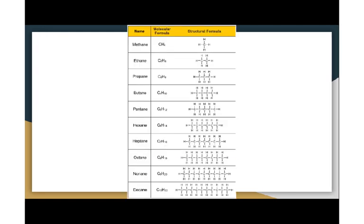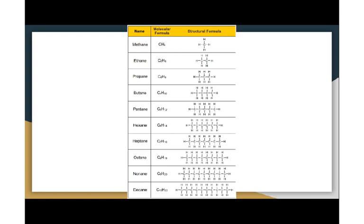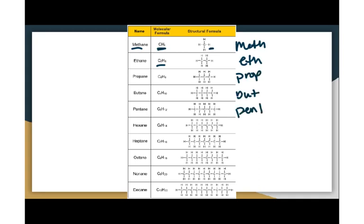Here's an example of alkanes. The first thing was to identify the longest carbon chain, because we need to identify what the name is going to be. So if you have the prefix meth, that's one carbon. Eth is two carbons. Prop is three. Butte is four. Pent is five. Hex is six. Hept is seven. Oct is eight. Non is nine. And dec is ten.